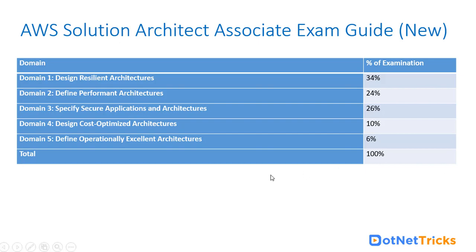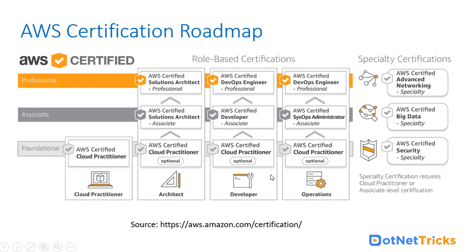Moving on to the certification path and certification roadmap as laid out by aws.amazon.com/certification. There are certain levels of certifications you should follow. For the foundational level, it is basically for people who are very new to AWS. They should opt for the AWS Certified Cloud Practitioner, which covers the entire gamut of services offered by AWS, but it is not mandatory. You do not have to complete the cloud practitioner certification before going for the associate level.